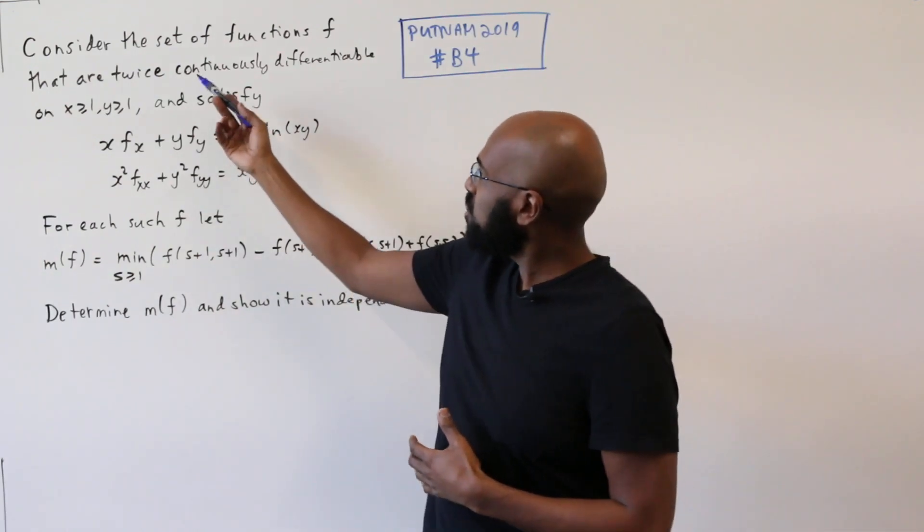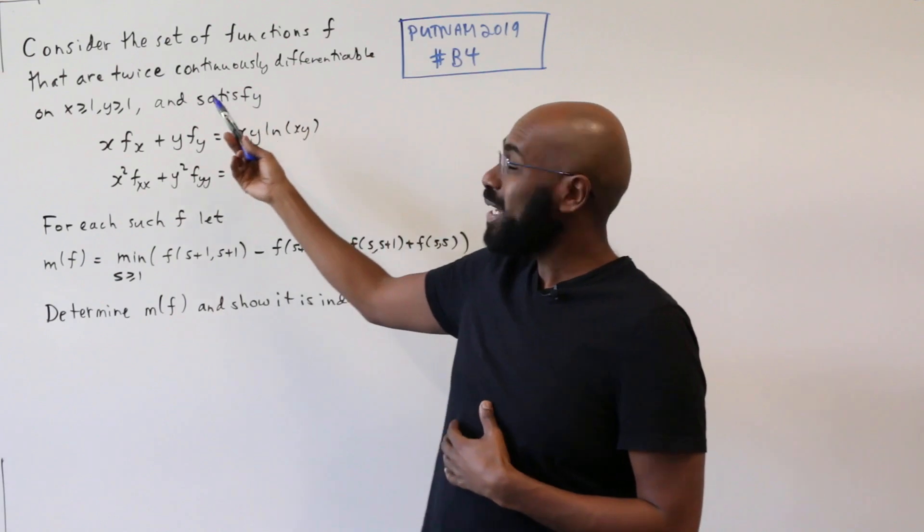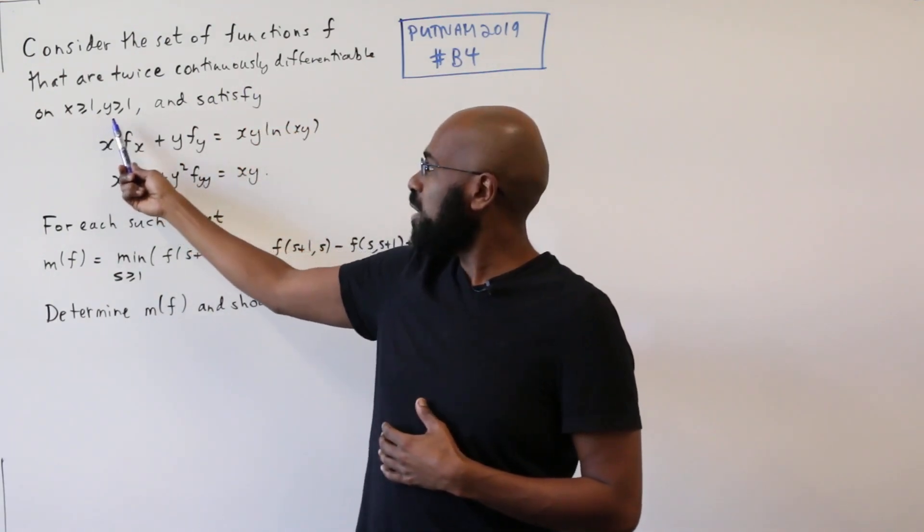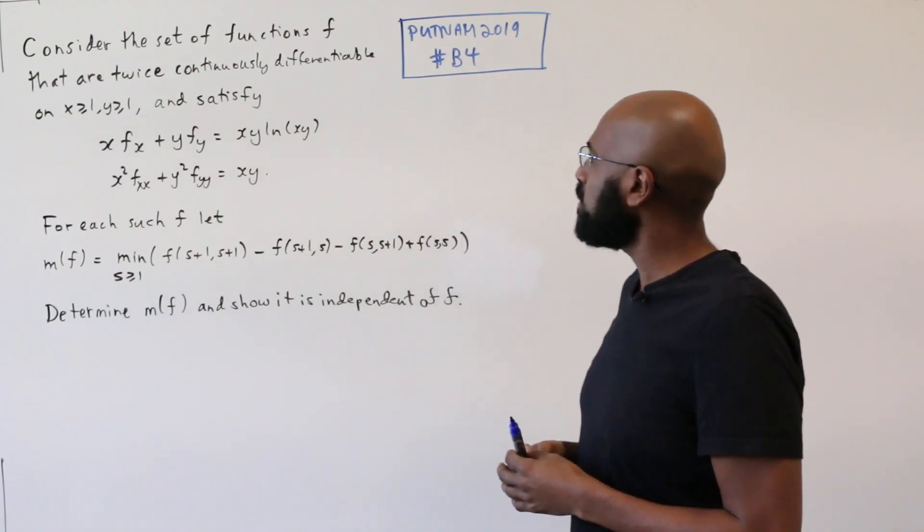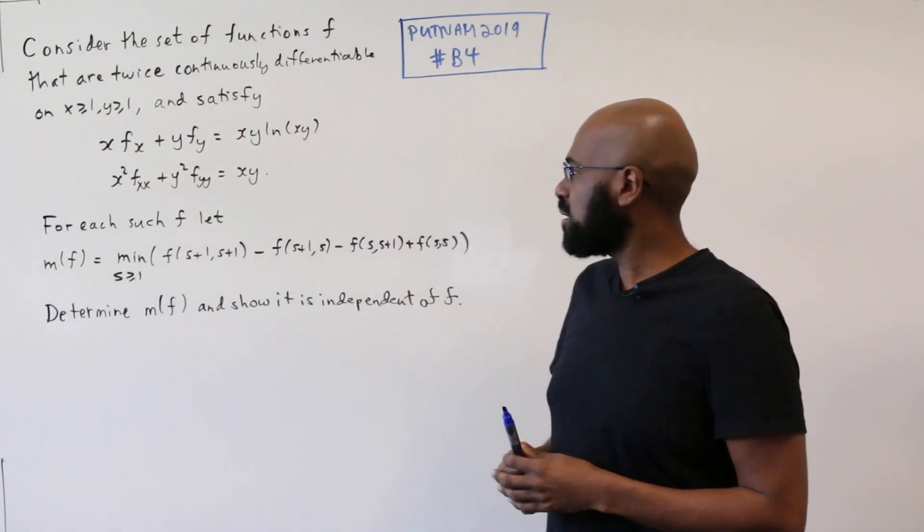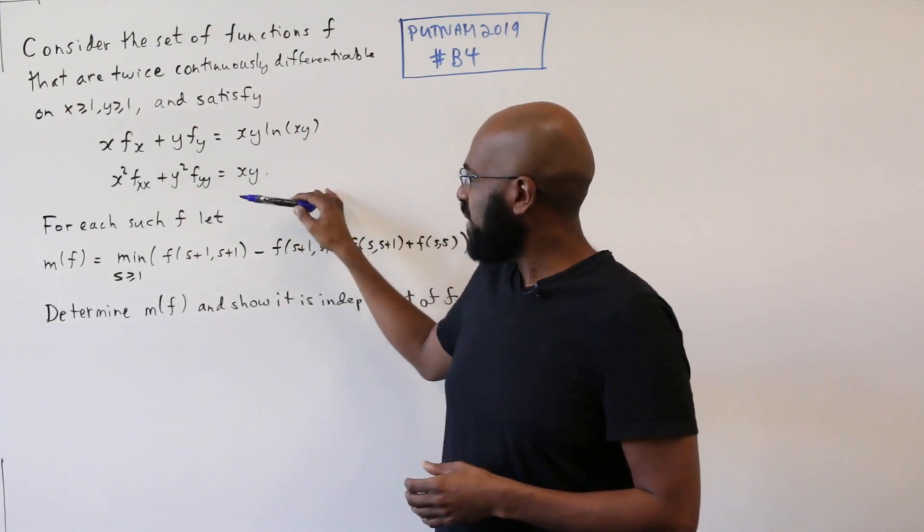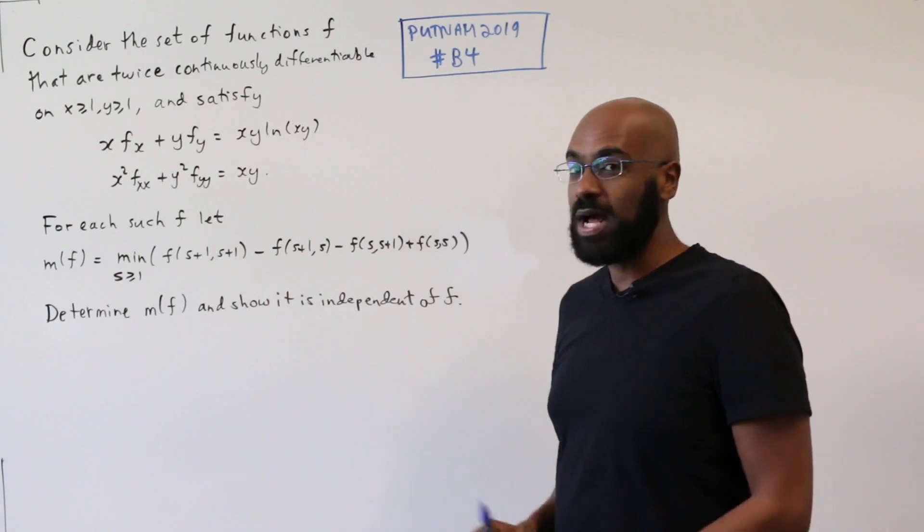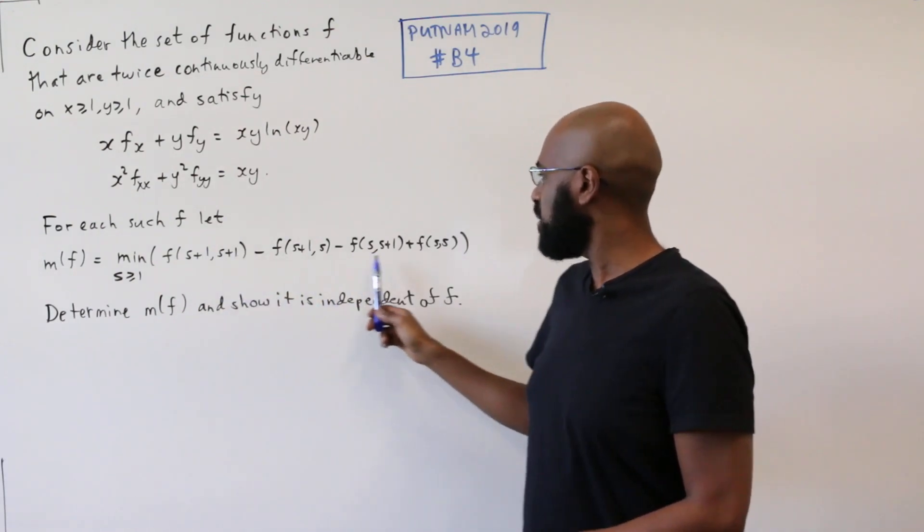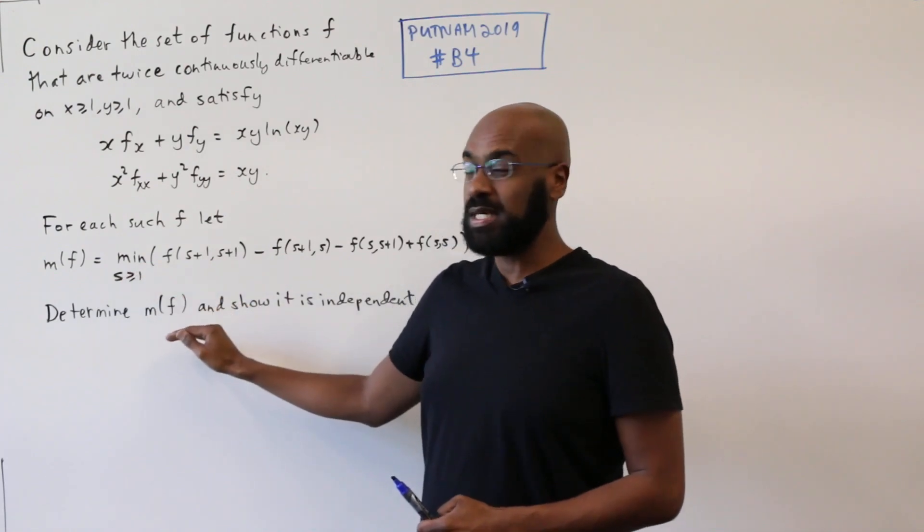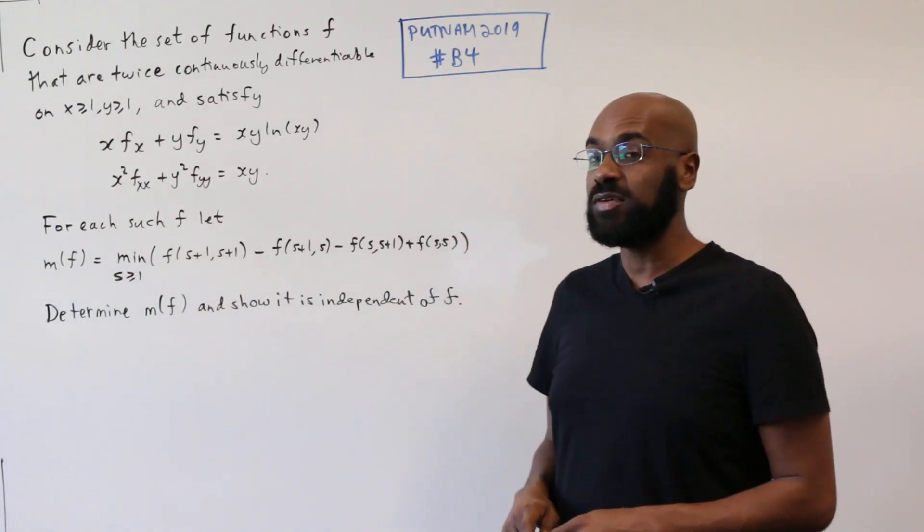So the question states, consider the set of functions f that are twice continuously differentiable for points x, y, where x and y are both greater than or equal to 1, and satisfy this set of differential equations. For each function in this family, we'll consider m of f which is the minimum over s greater than or equal to 1 of this quantity right here, and the problem has to determine what this minimum actually is and show that it doesn't depend on what f is.